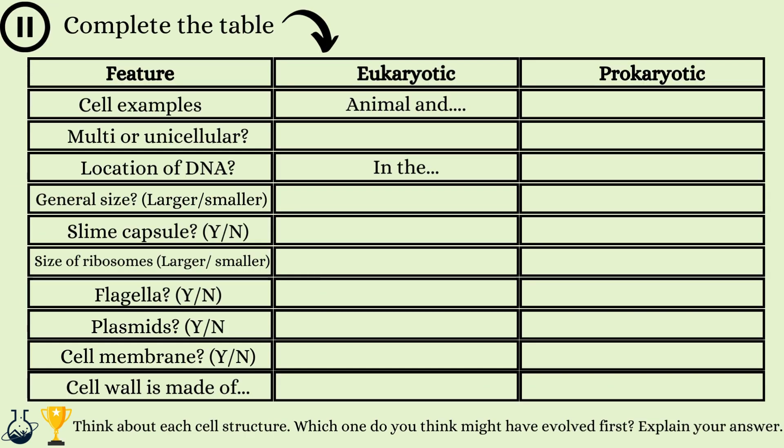Pause the video here and now use your diagram and what we have gone through so far to copy and complete the table to highlight key differences between eukaryotic and prokaryotic cells. Feel free to replay any portion of the video to refresh your memory, and if you finish, try the challenge. Let's see how you got on — get ready to mark your work.